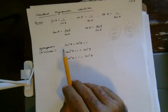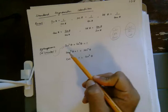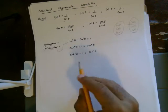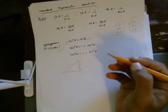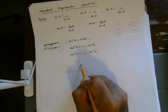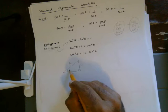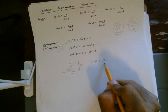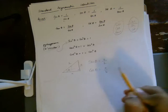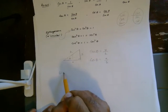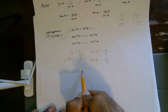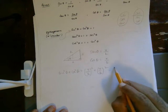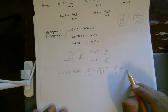Some of these identities are Pythagorean or circular identities. We can reach them using the equation of a circle, or using the Pythagorean theorem. For a right angle triangle with sides X, Y, and hypotenuse H, and angle theta, sine theta is opposite over hypotenuse and cosine theta is adjacent over hypotenuse. So sine squared plus cosine squared equals Y over H squared plus X over H squared, which is Y squared over H squared plus X squared over H squared.